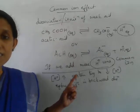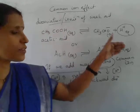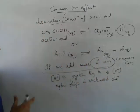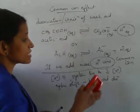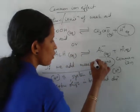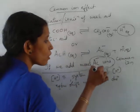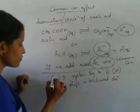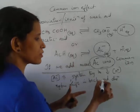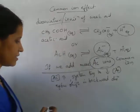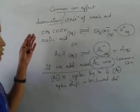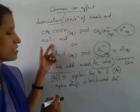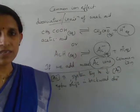Common ion effect means the suppression or decrease in the dissociation of an acid by the addition of a common ion. Here, the common ion was H plus. Similarly, if you add acetate ion instead, acetate is also a common ion since it is already present in the medium. If you increase acetate concentration, the system will try to decrease it, shifting the equilibrium in the backward direction — dissociation of acetic acid is again reduced or suppressed. This is also called common ion effect.